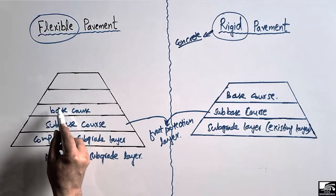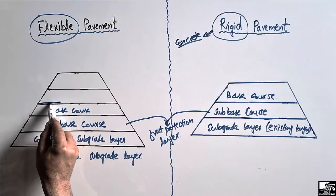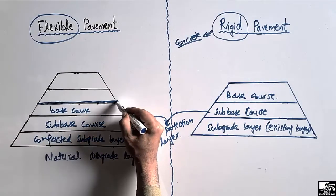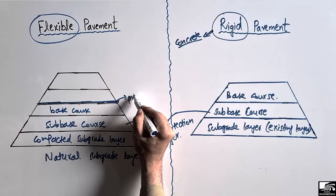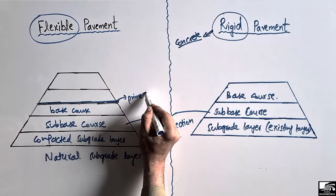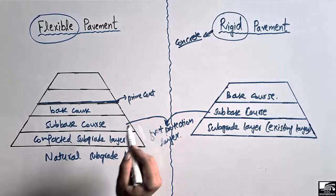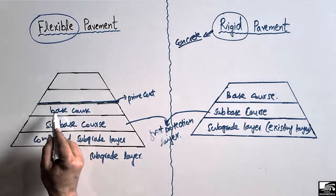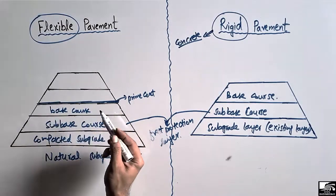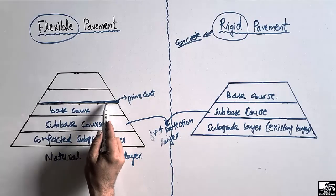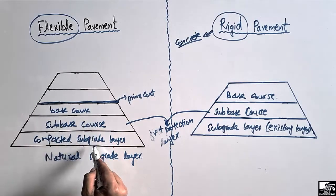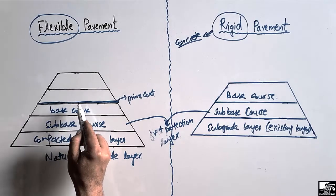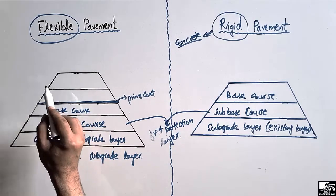In the case of flexible pavement, on top of the base course we provide a certain type of coating known as the prime coat. This prime coat is usually made up of bitumen material, and it is provided on top of the base course in order to resist the penetration of rainwater into the lower layers.